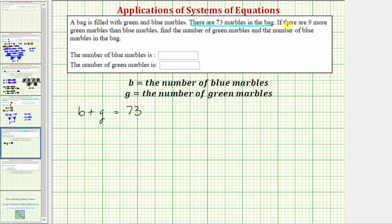We're also told there are nine more green marbles than blue marbles, which means g, the number of green marbles, must equal b, the number of blue marbles, plus nine. However many blue marbles there are, there will always be nine more green marbles.